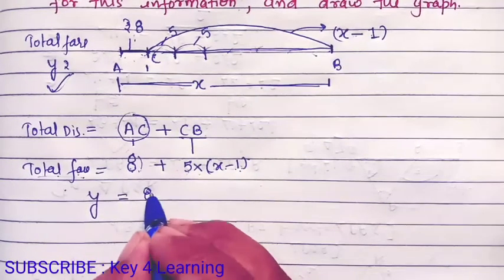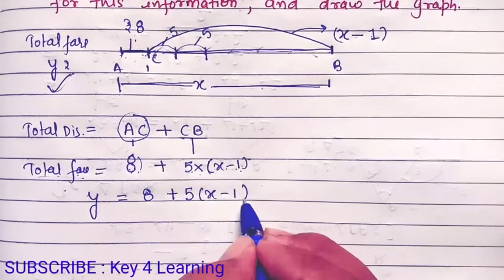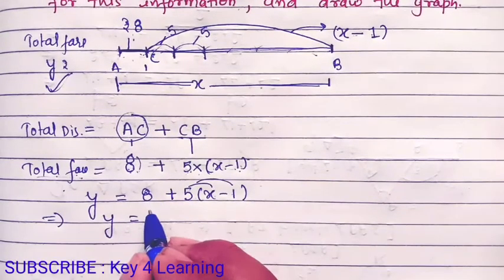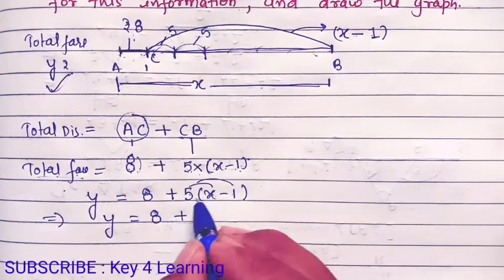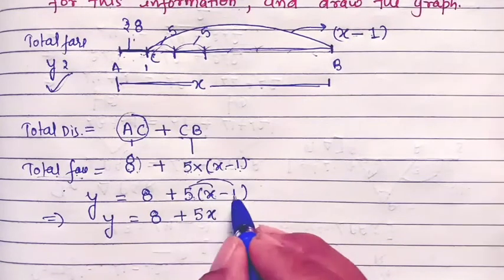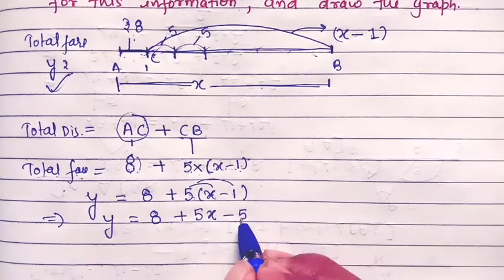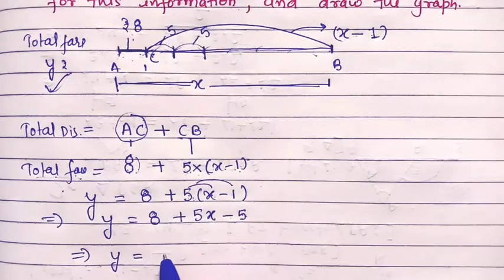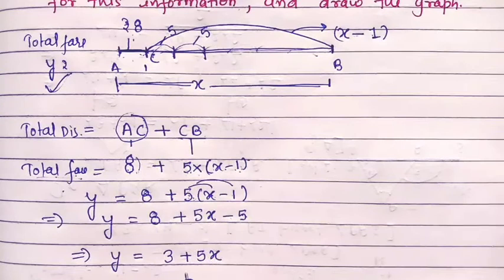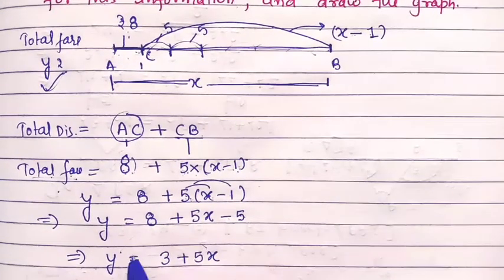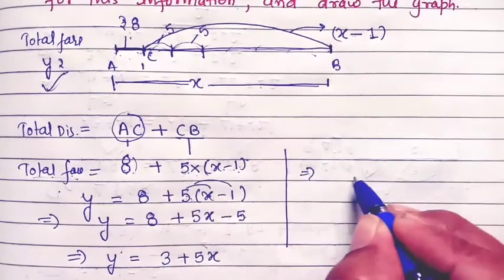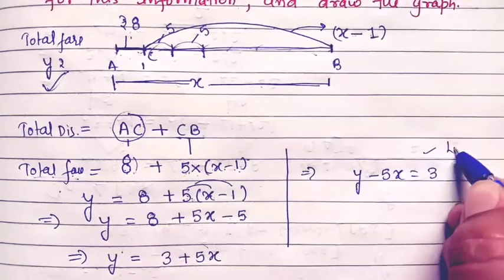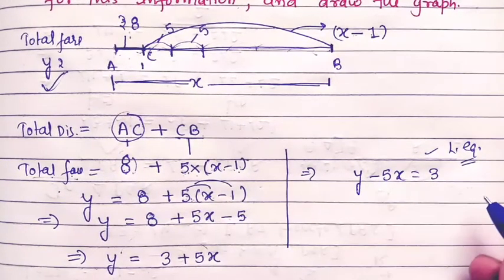तो equation बनी: y is equal to 8 plus 5(x minus 1). Multiply करने पर: y = 8 + 5x − 5, यानी y = 3 + 5x. इसको rearrange करें तो y minus 5x is equal to 3. यह बन गई हमारी linear equation। अब इसके respect में हमें graph बनाना है।